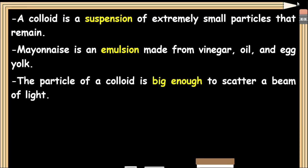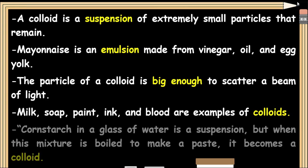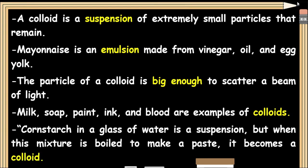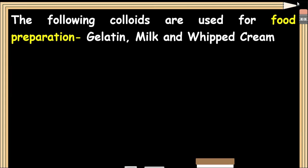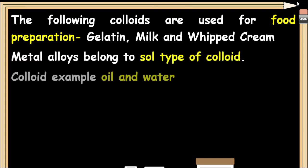A colloid particle is big enough to scatter a beam of light. Milk, soap, paint, ink, and blood are examples of colloids. Cornstarch in a glass of water is a suspension, but when this mixture is boiled to make a paste, it becomes a colloid. The following colloids are used for food preparation: gelatin, milk, and whipped cream. Metal alloys belong to the sol type of colloid.